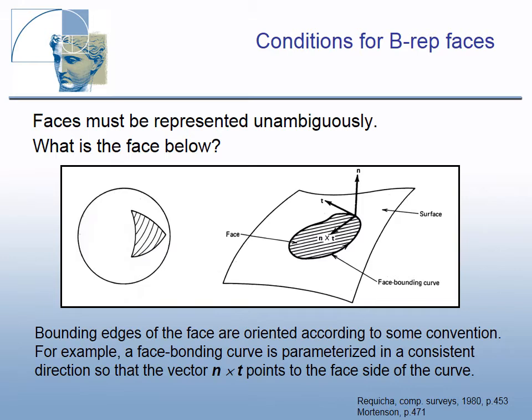For example, for the image at the left — is the face the hatched small triangle on the sphere, or the wide part of the sphere without the triangle? Bounding edges of the face have to be oriented according to some convention — for example, a face bounding curve is parameterized so that the vector n×t points to the face side of the curve, where n is a normal and t is a tangent vector.